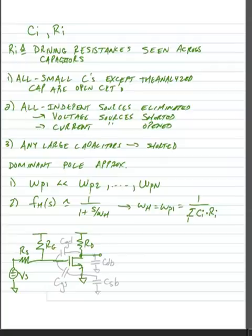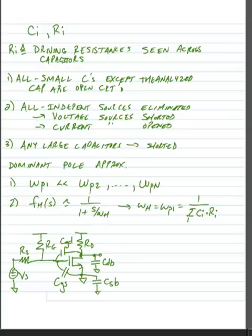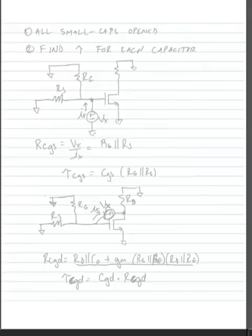We're going to draw the small signal capacitors associated with the common source amplifier, which will give us the open-circuit time constants. We have CGS, we have CGD (gate to drain), and at each of the drain and source we have what we call CDB (drain to bulk) and CSB (source to bulk). All small capacitors are open-circuited and we find the resistance each one sees individually to find a time constant tau for each capacitor.